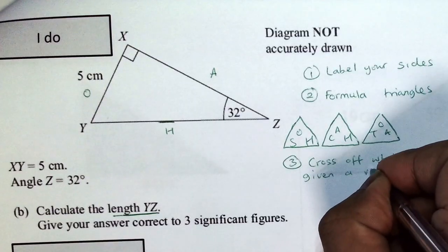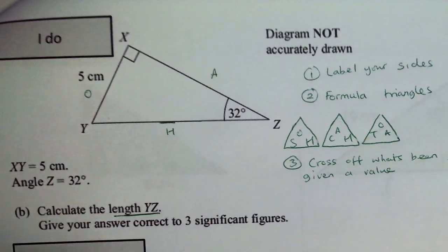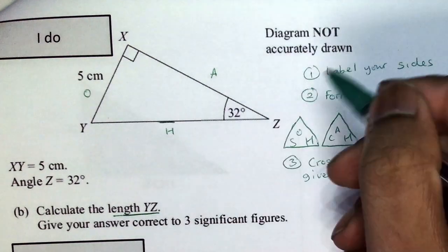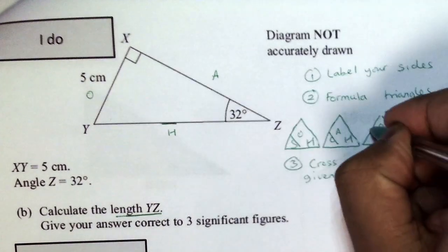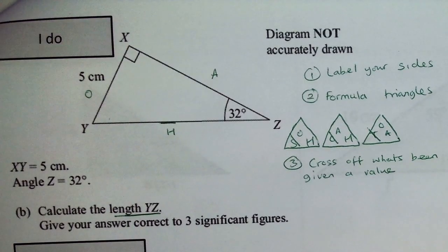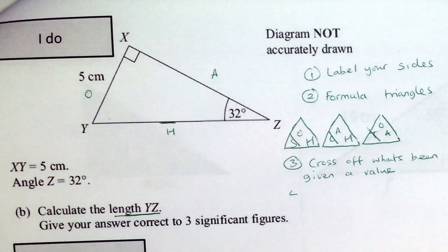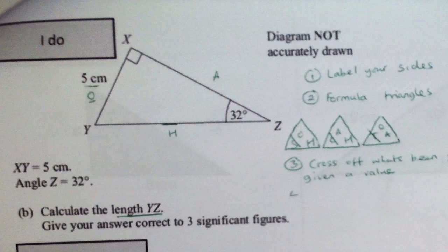So, here we go. What's been given. What's been given a value. Now, what I mean by that is it's been given a numerical value. Now, what's been given a numerical value? The three, the angles. So, as we said, the S, the C and the T are all connected to your angle so you always cross these three off.